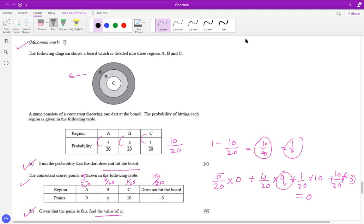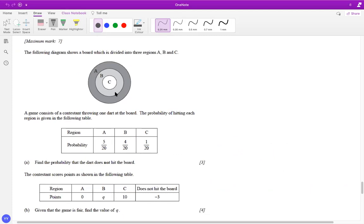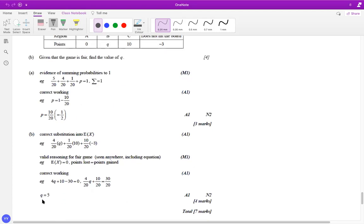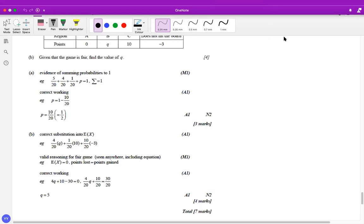So let's check the value of Q, because there's a mark scheme available. So the value of Q is approximately 5 here. So this is how you tackle the questions on fair game. I hope it is clear.